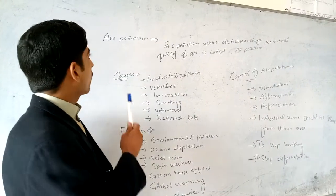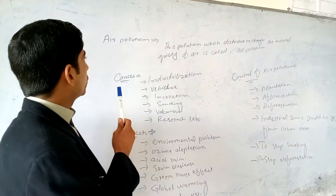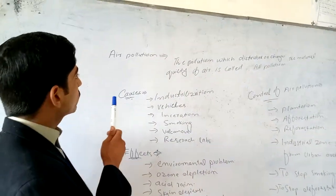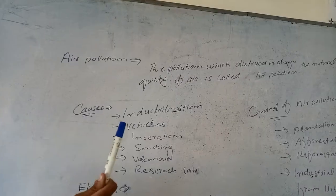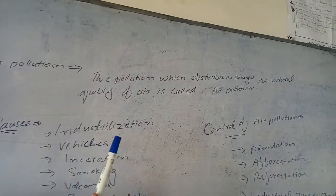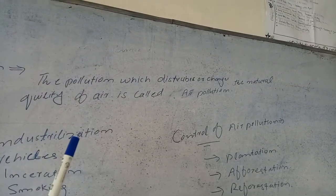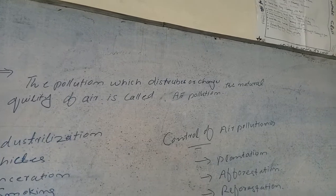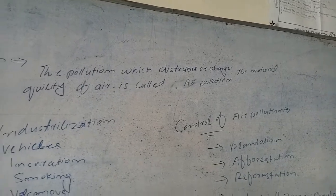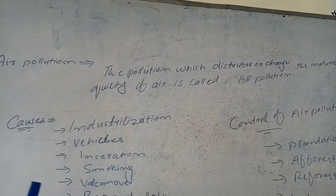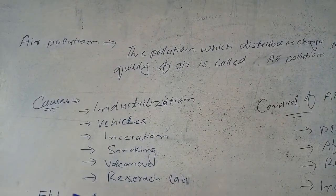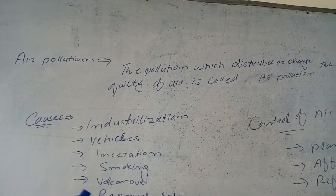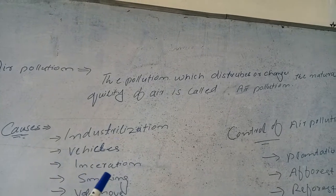Types of artificial pollution — first one is air pollution. The pollution which disturbs or changes the natural quality of air is called air pollution. If the pollution destroys or changes the natural quality of air, it is called air pollution.